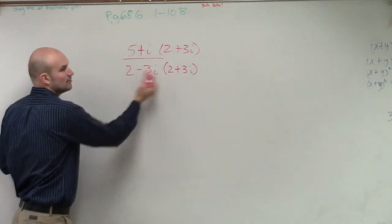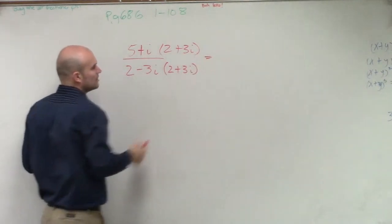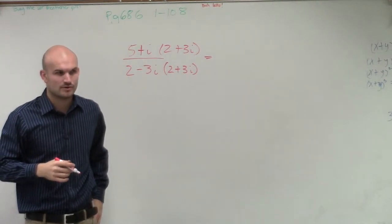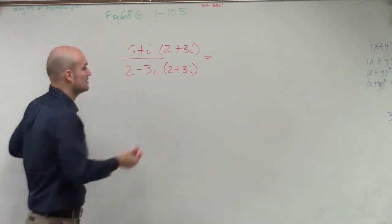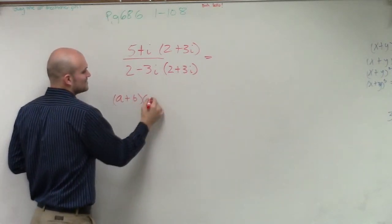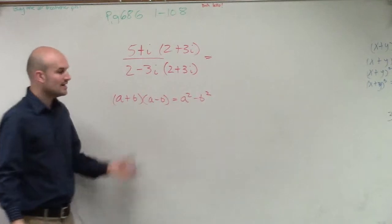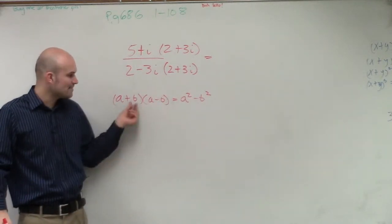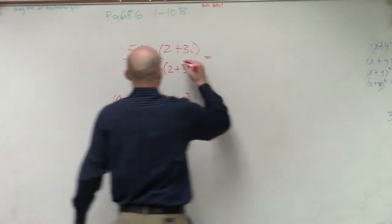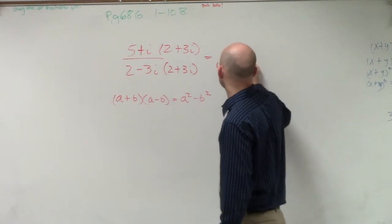Now we know why we multiply by the conjugate. What's so helpful is when we multiply out this binomial on the bottom, we can use the difference of two squares. Remember: if I have (a + b)(a − b), that simply equals a squared minus b squared, because the middle terms cancel out. So the denominator becomes 4 minus 9i squared.